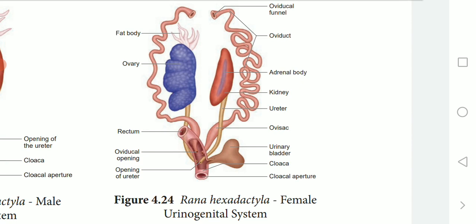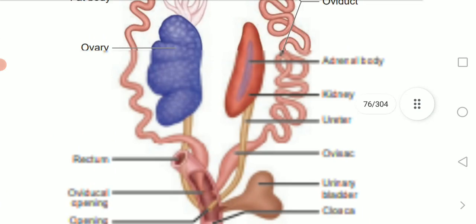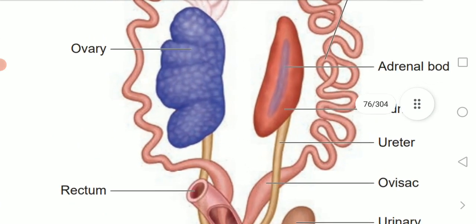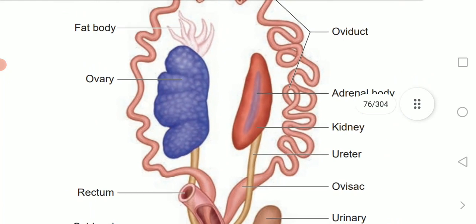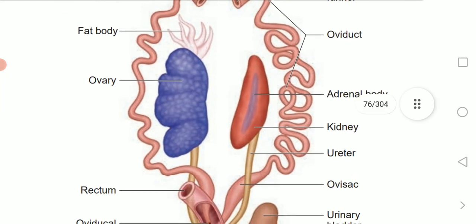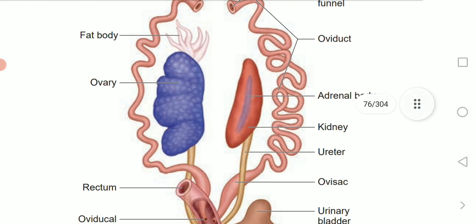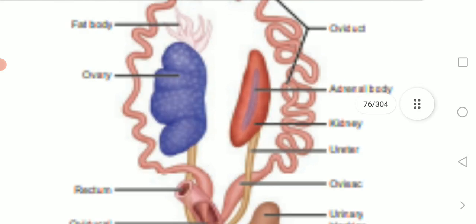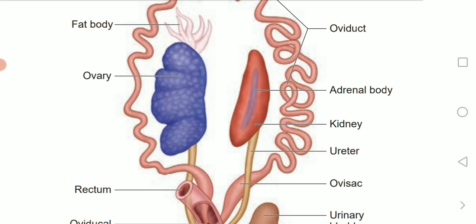The paired ovaries are attached to the kidney and dorsal body wall by folds of peritoneum called mesovarium — in the male we call it mesorchium; here it is mesovarium. There is a pair of coiled oviducts lying on each side of the kidney.